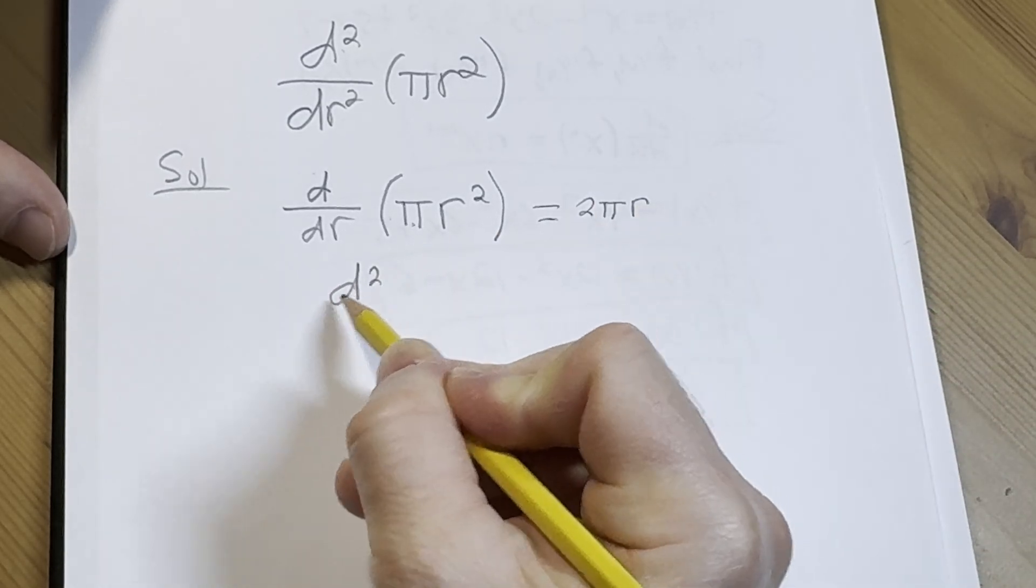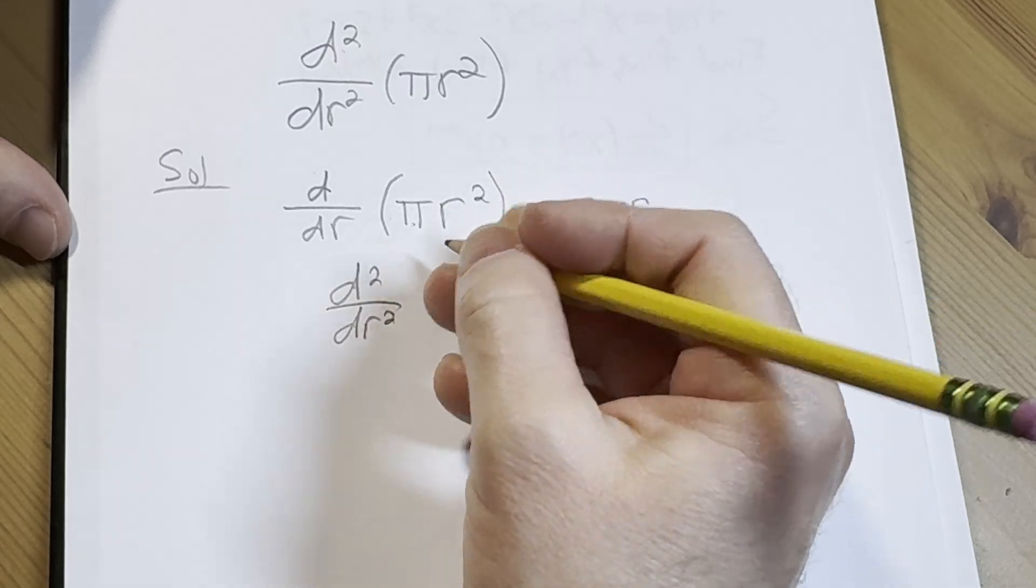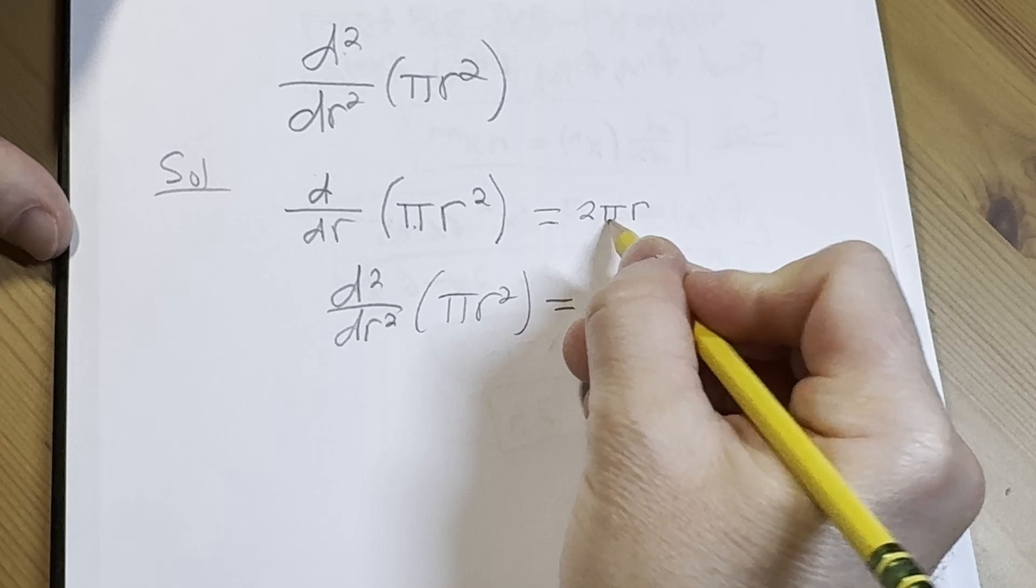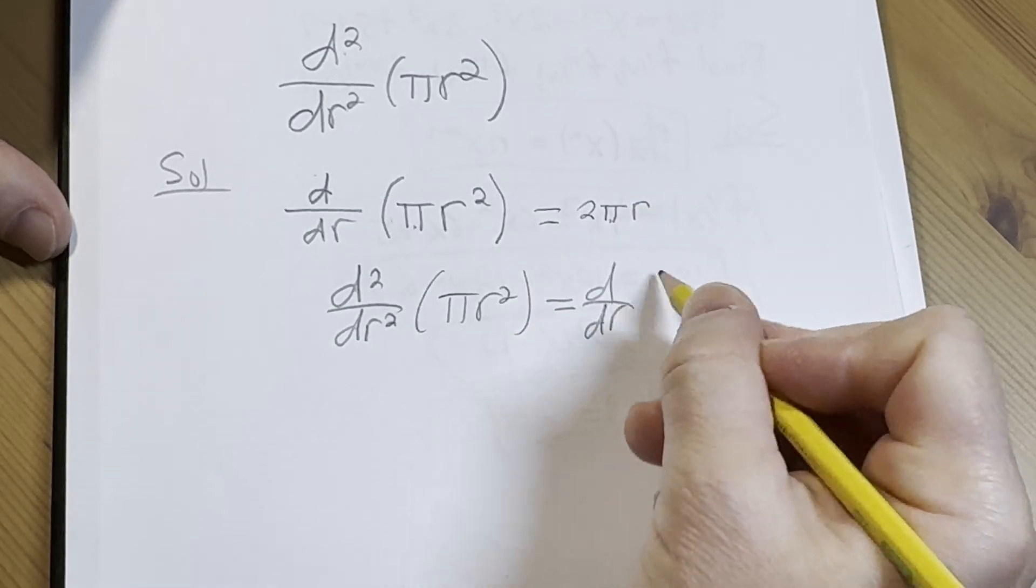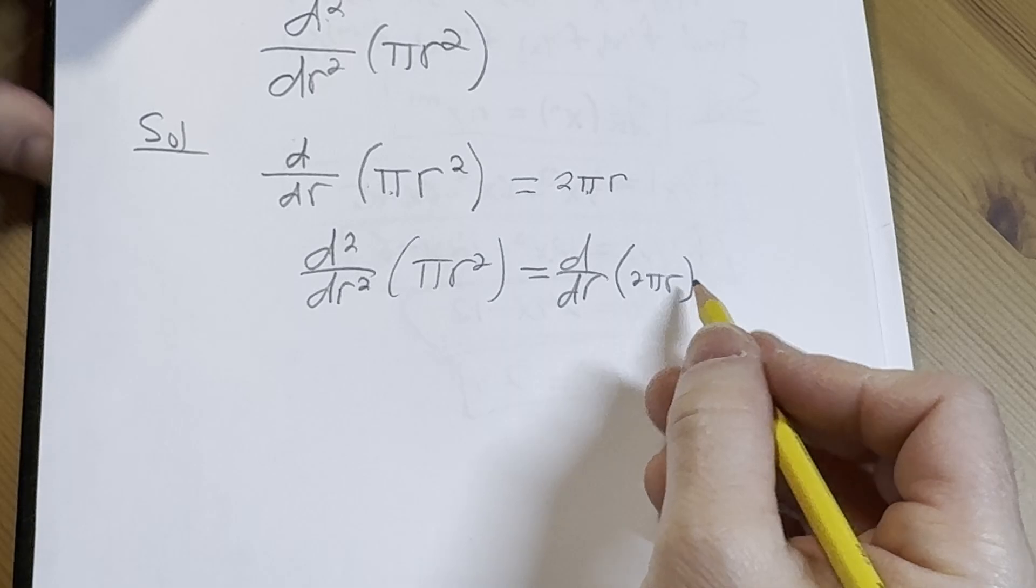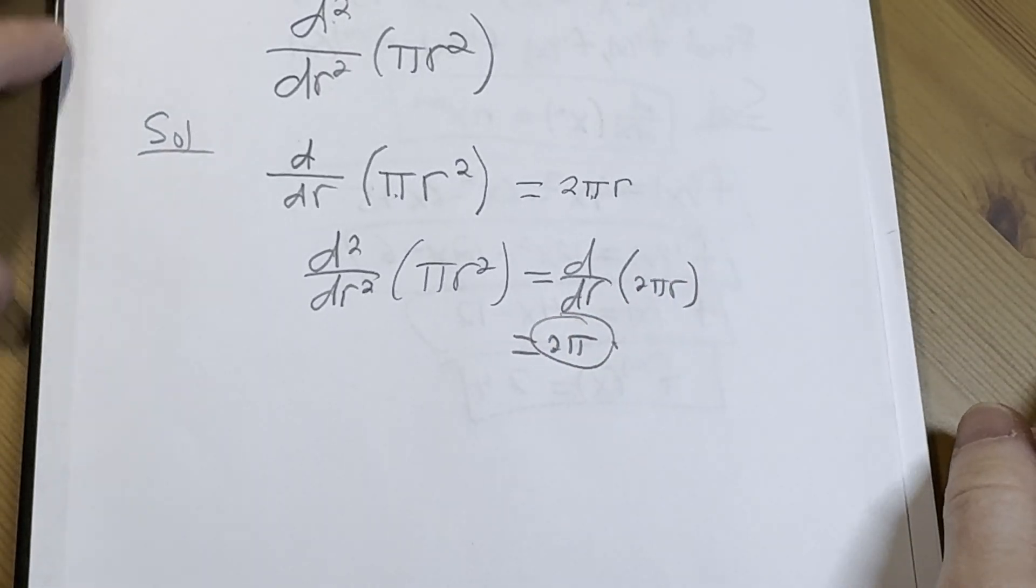Doing it again, so the second derivative is going to be, well, it's just the derivative of this, right? And then two pi is a constant, the derivative of r is one. We're just left with two pi, and that would be the final answer.